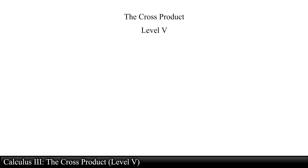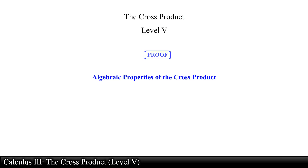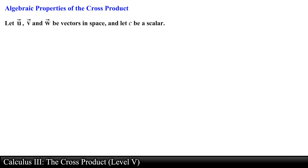The cross product, level 5. In this video we will go over and prove various algebraic properties of the cross product. Let's start with the first algebraic property. Let u, v, and w be vectors in space and let c be a scalar.